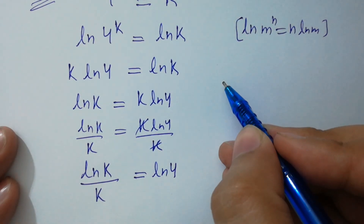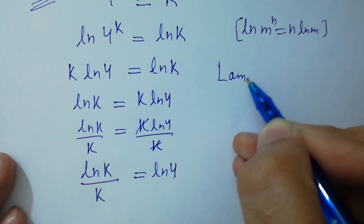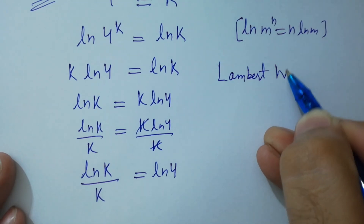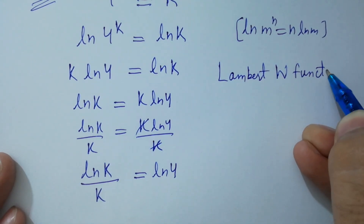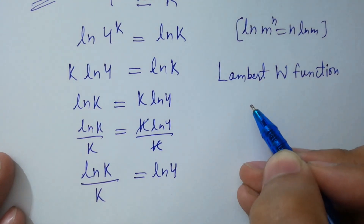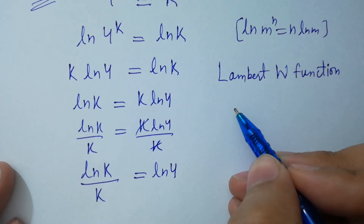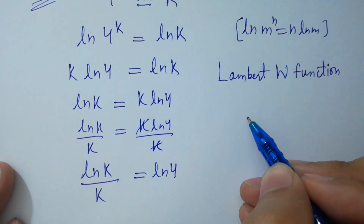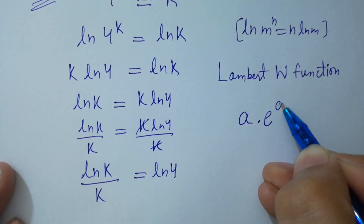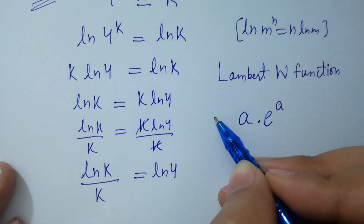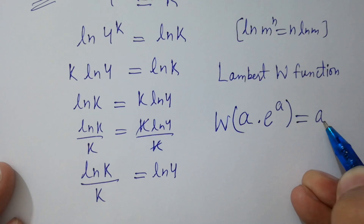I am going to apply the Lambert W function here, which is very easy and simple. If we have a times e to the power a and apply the Lambert W function, it equals a. That's it.